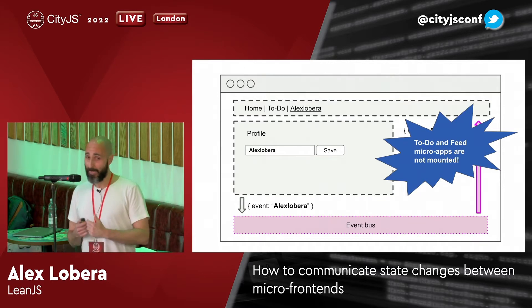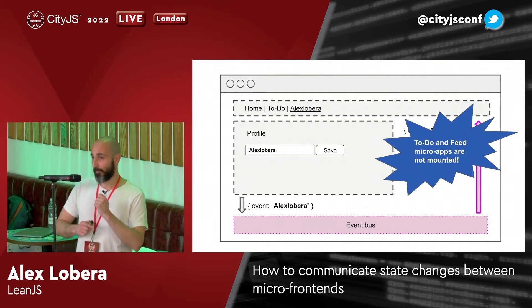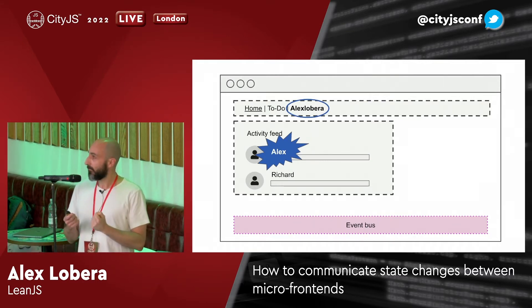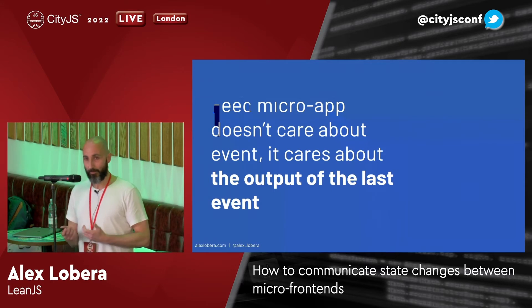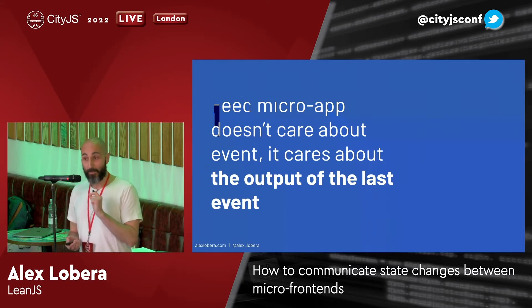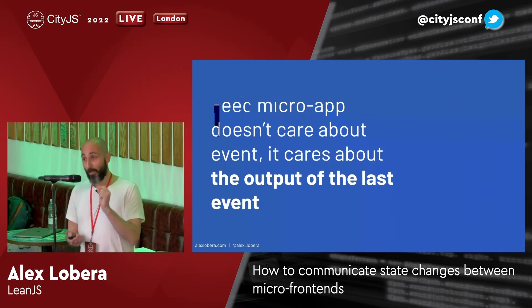We could fix this by making our event bus smarter — storing which events are delivered to which micro-apps, so when you mount a micro-app that wasn't mounted before, it can catch up. But it's getting complicated. The thing is, the feed micro-app and other micro-apps don't really care about events. We're using an event bus because we think it could solve the problem, but what they care about is the output of the last event. If I change my name 20 times and then mount a micro-app, I don't want the 20 previous events — I just want the output of the last event. We also refer to that as current state.